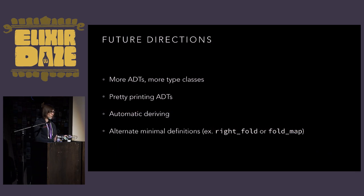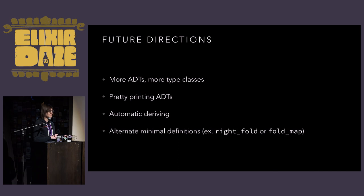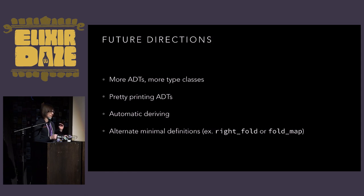Future directions for these libraries: I want more data types — there are maybe about a dozen or so in Algae right now, and I want more. More type classes as well, to keep extending those hierarchies. I want some pretty printing of the ADTs, since some can be quite large — for example, having trees lay out nicely as trees. Automatic deriving for some things: if you make a Monad instance, you actually get all of its dependencies for free with defaults, so it would be nice to not have to define five different instances — you could just define one. And alternate minimal definitions: for some of these, you're forced to define a particular function, but you might be able to define another one because they can derive each other. For example, foldable things — right now you have to define a right fold, which gives you fold map, but if you give it fold map, you should be able to derive the right fold.